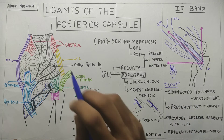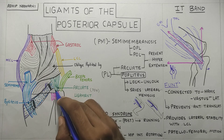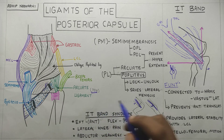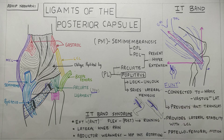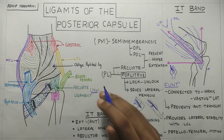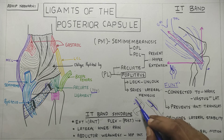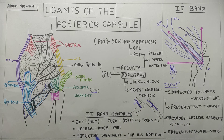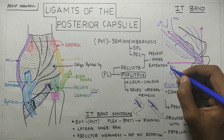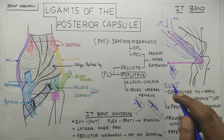To summarize: we talked about the ligaments of the posterior capsule — the posterior oblique ligament along with the arcuate ligament, the Y-shaped ligament seen in 70% of people, prevents hyperextension. The popliteus causes locking and unlocking and also prevents the lateral meniscus from getting injured. We talked about the IT band, its attachment, function, and two conditions: IT band syndrome where the IT band snaps over the lateral femoral condyle or proximally over the greater trochanter causing lateral knee pain or hip pain, and patellofemoral pain syndrome where the IT band through the patellofemoral ligament influences the position of the patella in the patellofemoral groove.